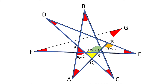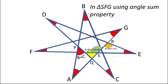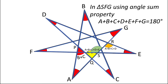So now I can move on to the triangle F, G, S. In this triangle F, G, S, we can simply use the angle sum property, which will give us a plus b plus c plus d plus e plus f plus g equals 180 degrees. So that's how we can solve the 7-pointed star problem.